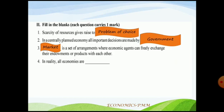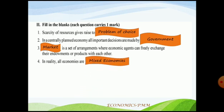Fourth blank: in reality, all economies are different. There are three types of economies in the world — capitalistic, socialistic, and mixed economies. But in reality, we will never find a purely capitalistic or perfectly socialistic economic system. The reality is a combination of both. So in reality, all economies are mixed economies. The best example is India, which follows a mixed economy.